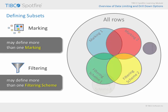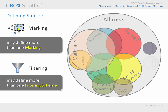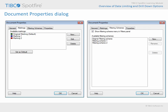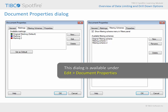Additional markings and filtering schemes are possible, adding further flexibility as well as the potential for additional complexity to the analysis document. Fortunately, there is a dialog which provides control over the color and name of markings which are defined in a given analysis document, as well as the names of different filtering schemes which have been created. Under the edit menu, the document properties dialog is the location to remember for evaluating and editing these defined data subsets.